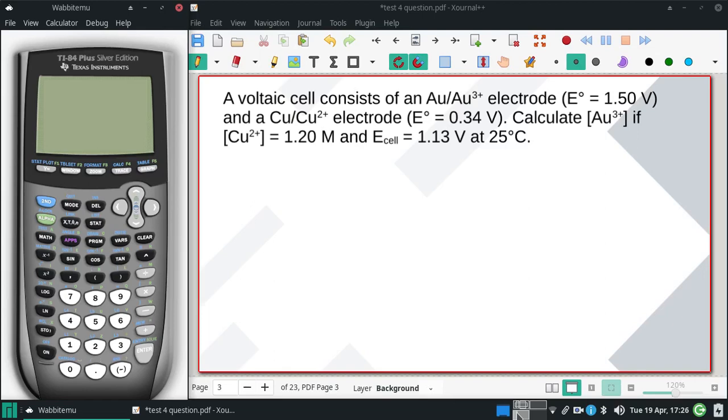A voltaic cell consists of a gold to gold³⁺ electrode and a copper to copper²⁺ electrode, and I got the E° values from a table. We want to calculate the gold concentration if the copper concentration is 1.2 molar and the E of the cell is 1.13 volts.